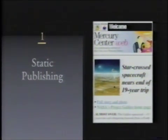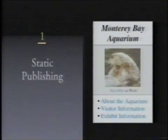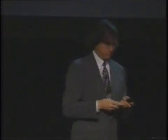The first one we call static publishing. This is where you make web pages and you publish them, and they don't change until you change them. This is what 99.9% of the web is doing today. Here's an example with the Mercury Center News Service. Here's another example with the Monterey Bay Aquarium. Everybody's making web pages, and that's wonderful. But no one's making much money on this yet, because to publish static web pages you don't really need to buy fancy web server software. There's a hundred public domain packages out there you can get for free and just start publishing your pages.